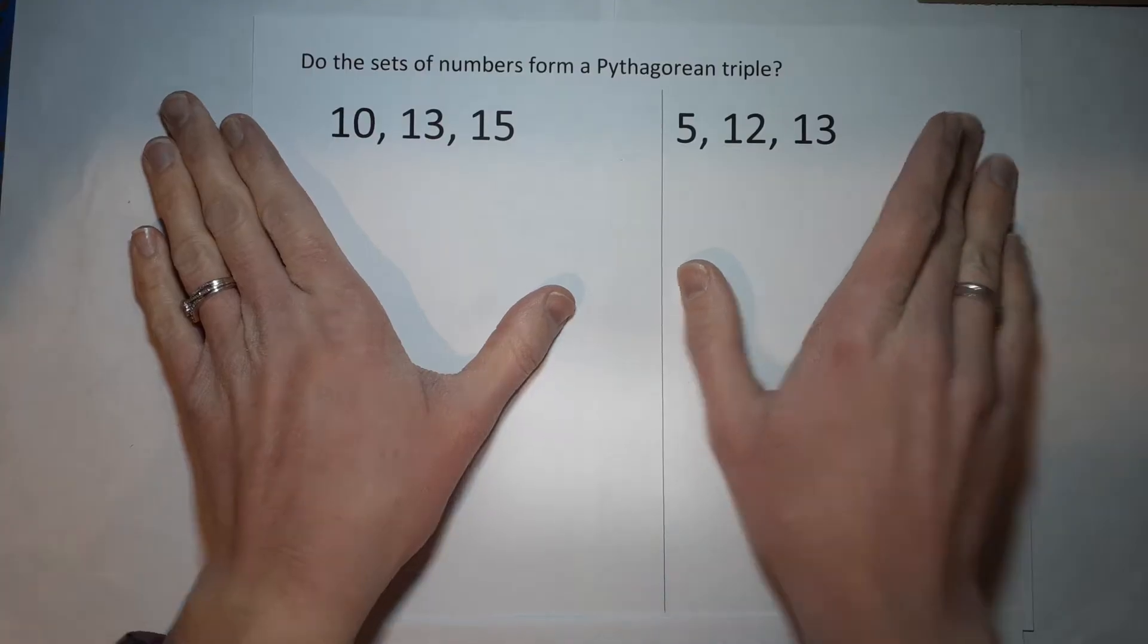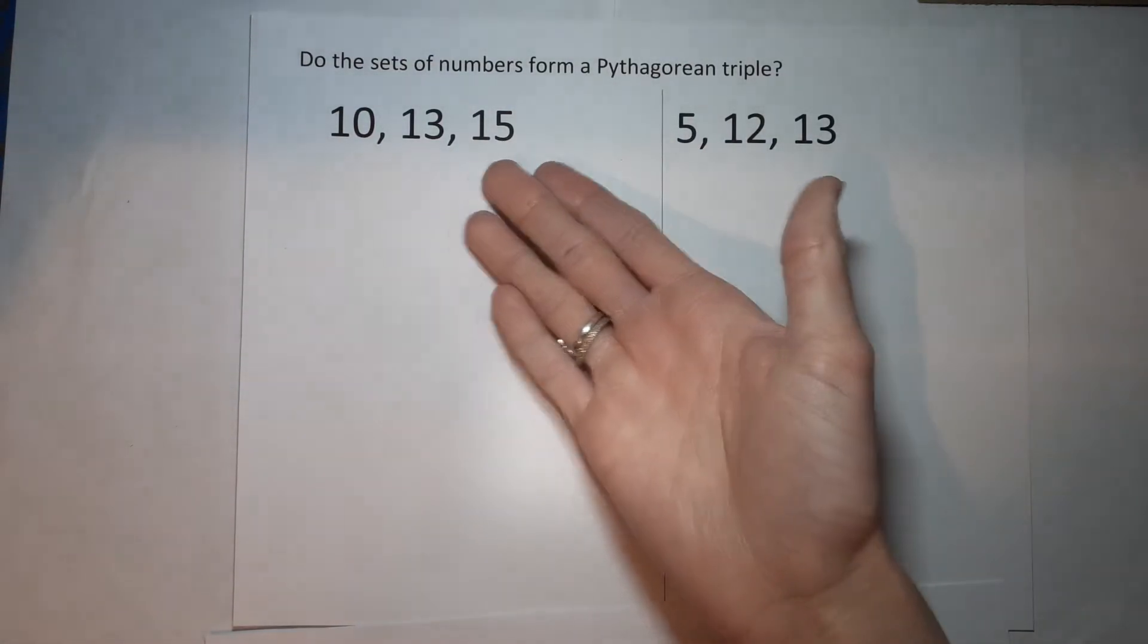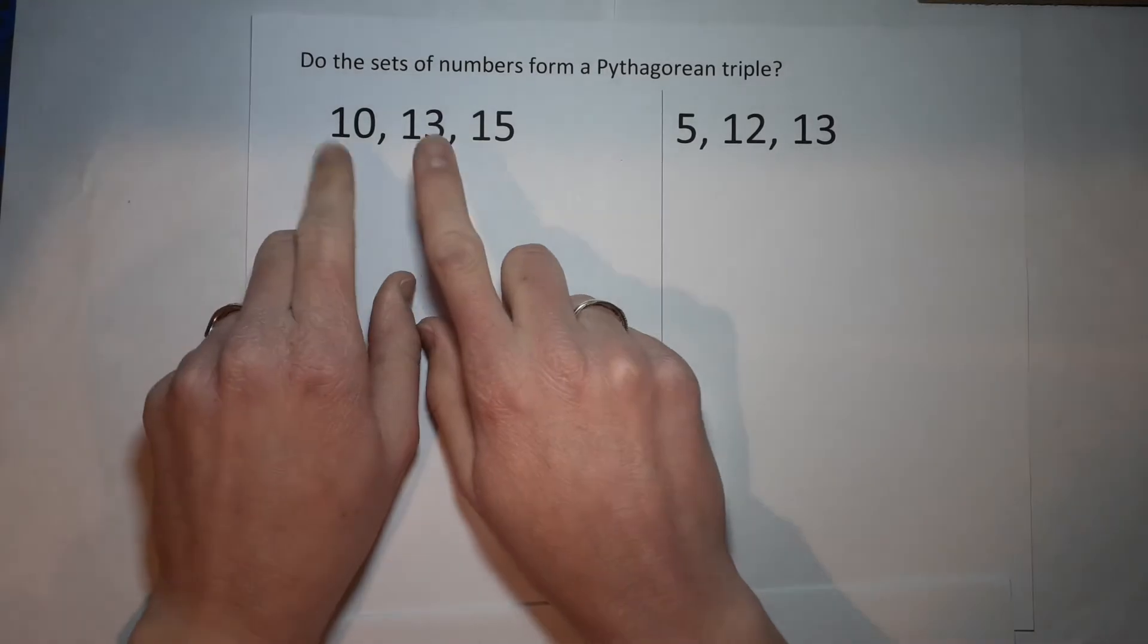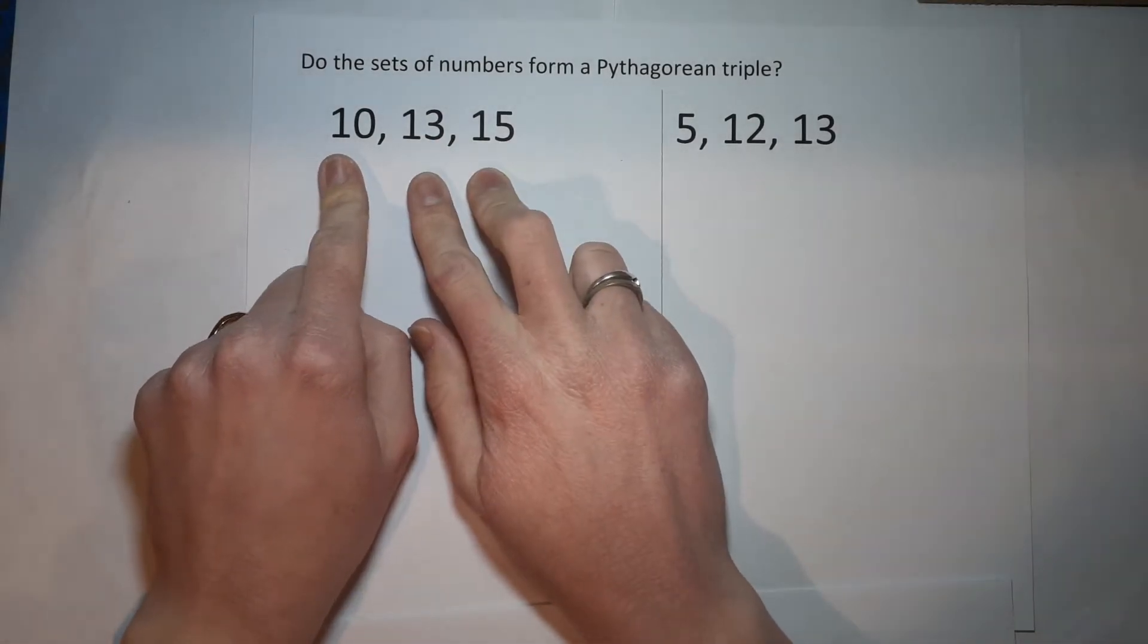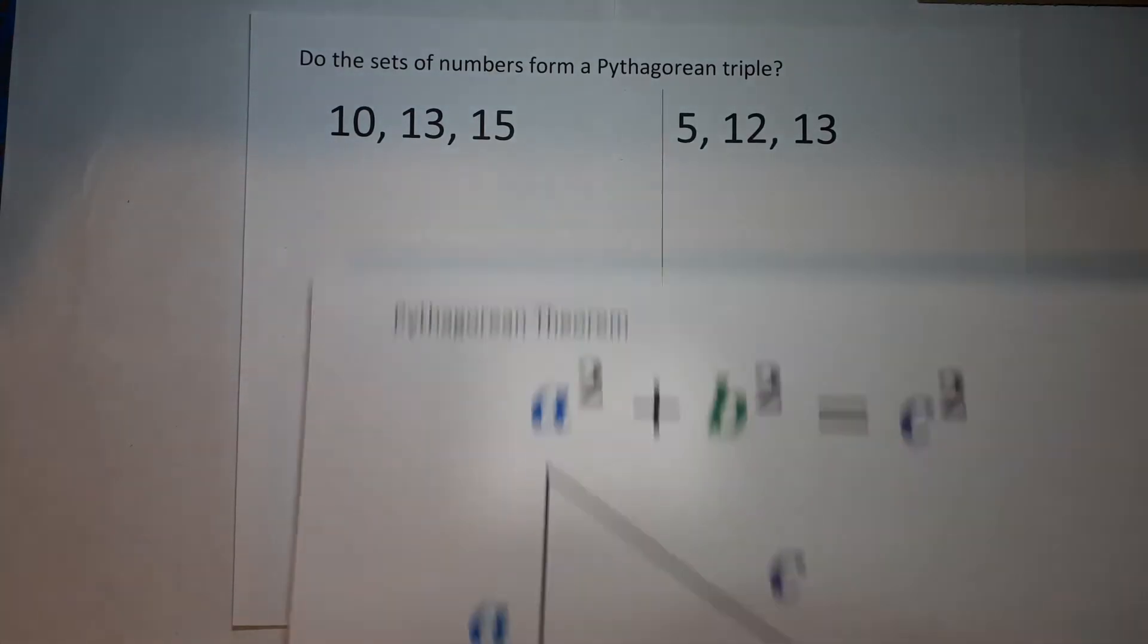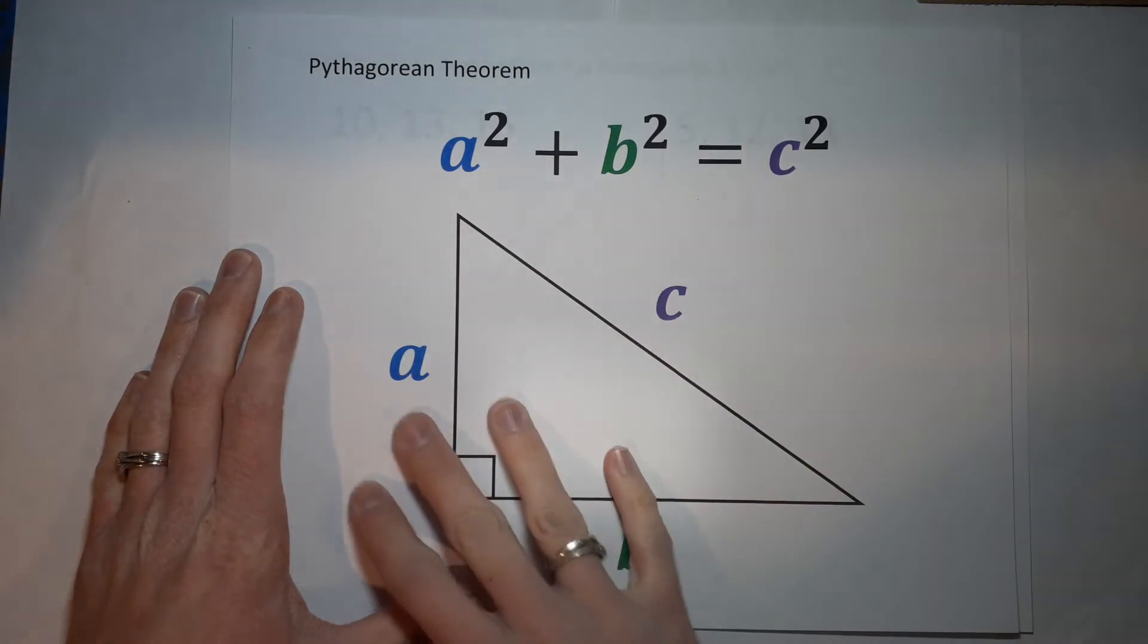Let's get started. They're wondering if this set of numbers 10, 13, and 15 is a Pythagorean triple. So basically what they're asking is, could these be the sides of a right triangle? Pythagorean theorem is what helps us determine if something can be a right triangle.